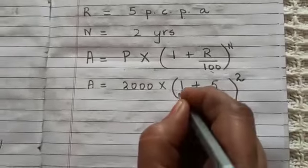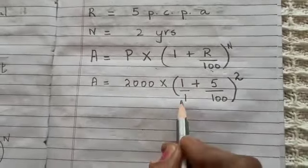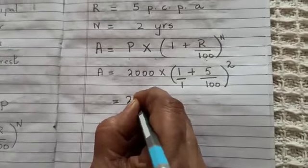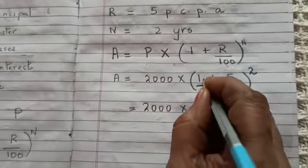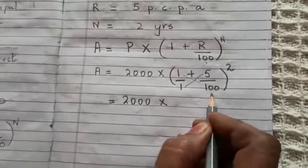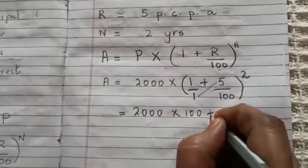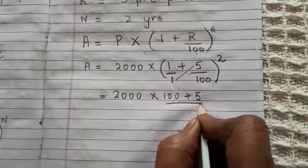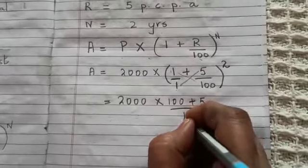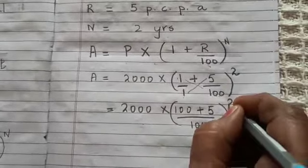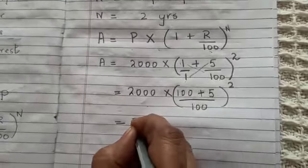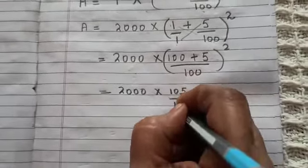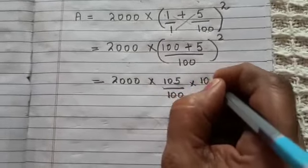Now solving this, we put the denominator for 1 as 1 and cross multiply to equalize the denominators. We get 2000 multiplied by (100 plus 5) upon 100, the whole raised to the power of 2. That is 2000 into 105 upon 100, raised to the power of 2. Since the power is 2, we write 105 upon 100 twice.